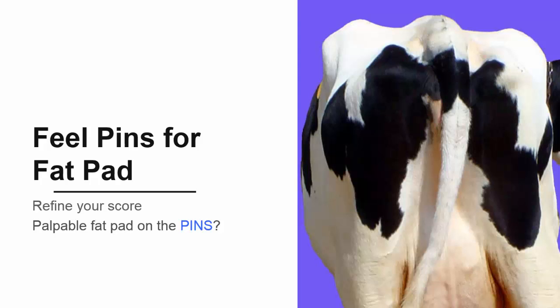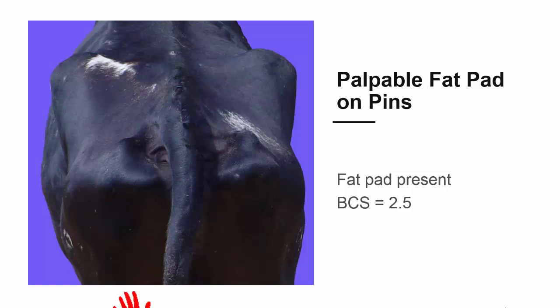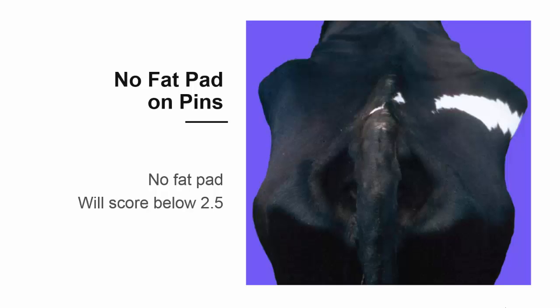Now, let's refine that score of less than 2.75 by evaluating the pins more closely. Can you feel a fat pad on the point of the pins? If you can feel a fat pad on the point of the pins, the cow will score 2.5. If you cannot feel a fat pad, the cow will score less than 2.5.